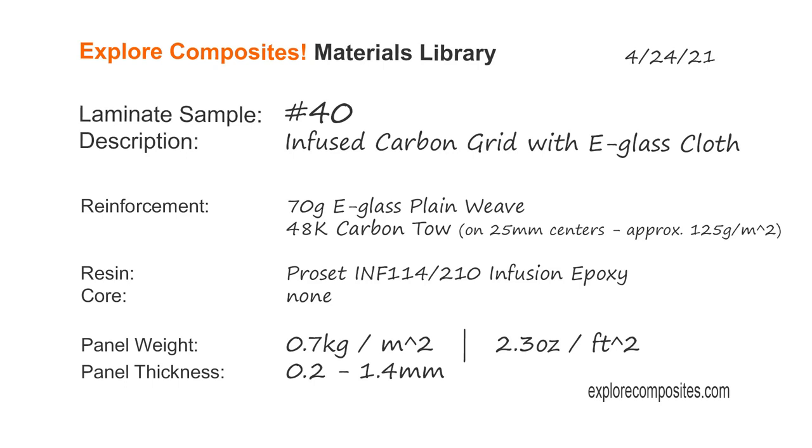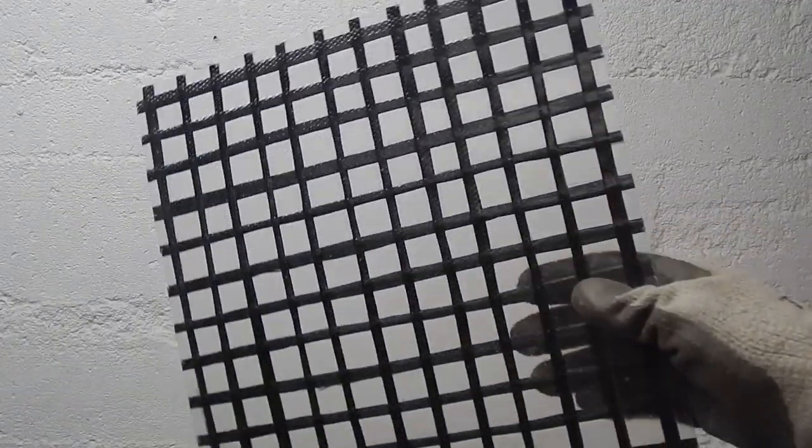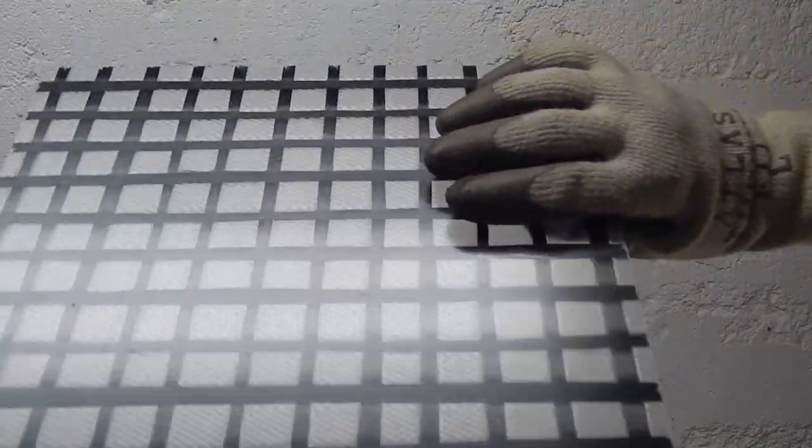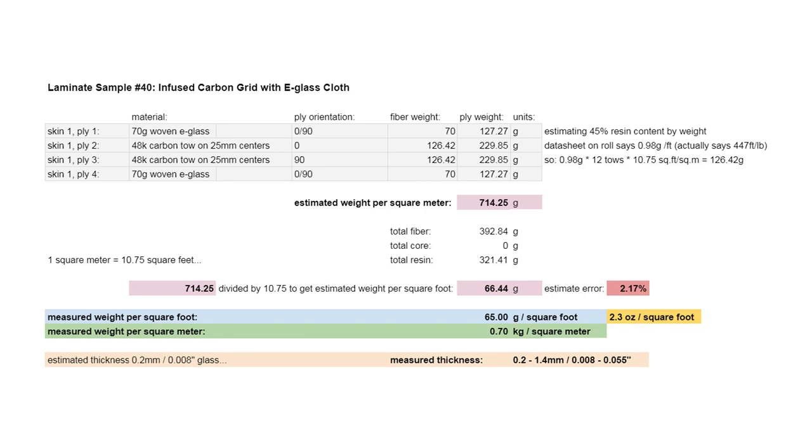Welcome to the Explore Composites materials library. This is laminate sample number 40. This is a grid of carbon tow with two very light plies of e-glass on either side.